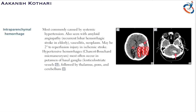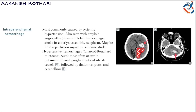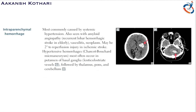Hypertensive hemorrhages involve Charcot-Bouchard microaneurysms in small lenticulostriate vessels. When these vessels rupture, there is infarct, ischemia, or hemorrhage in the brain. These hypertensive hemorrhages are most commonly seen in the basal ganglia — specifically the putamen — followed by the thalamus, pons, and cerebellum.